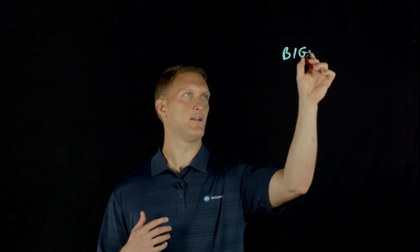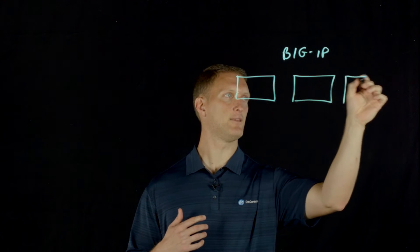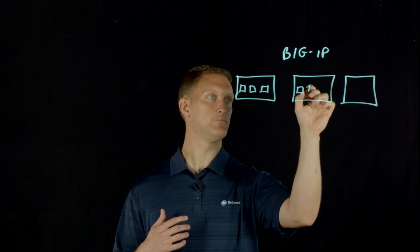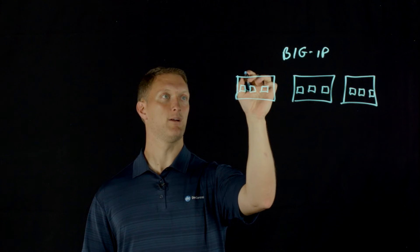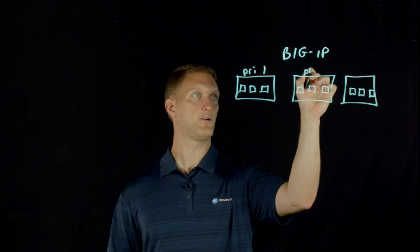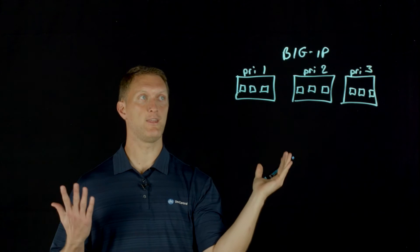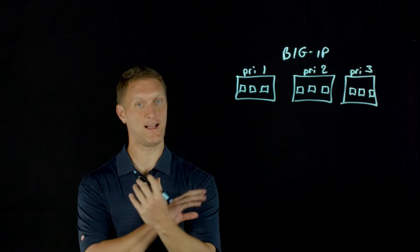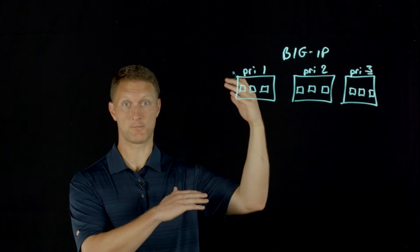I'm going to draw a couple of little diagrams here. Let's say you have your big IP and you have three priority groups defined. Each of these groups has three pool members. I'll label this one priority one, this one priority two, and this one priority three. One quick point: some would think that priority one is the most important, but it's actually just the opposite — the highest number is the highest priority. So priority three is going to get the traffic first.